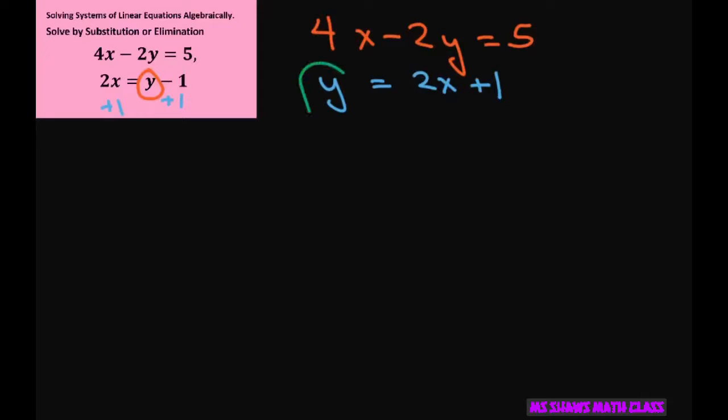Since we have isolated our y, we can substitute that in for our y here. So I'm going to write 4x minus 2 and put the y place there equals 5. And we're going to substitute 2x plus 1.